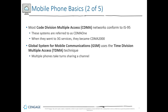Both GSM and CDMA are used in different parts of the world. GSM is the most widely used globally, with about 200-plus countries using it. However, in the US, CDMA is the most widely used. It really just depends on the area and country. Some cultures base their wireless technology on what is best in that area, while in the US we tend to do our own thing regardless of what the rest of the world is doing.